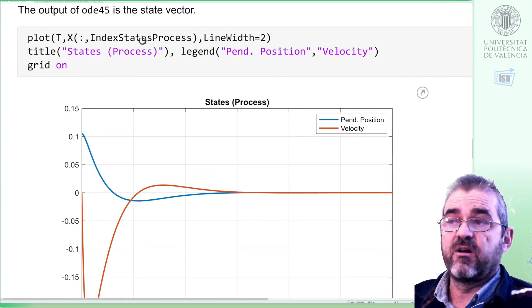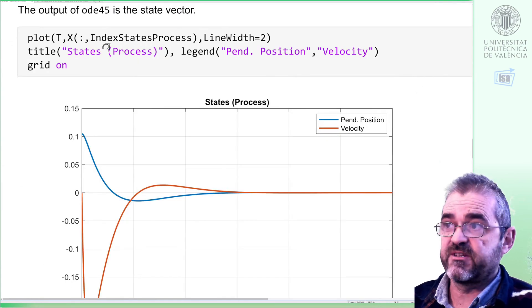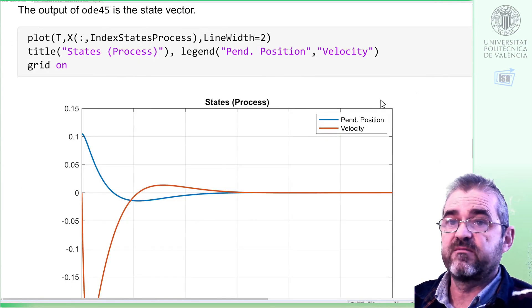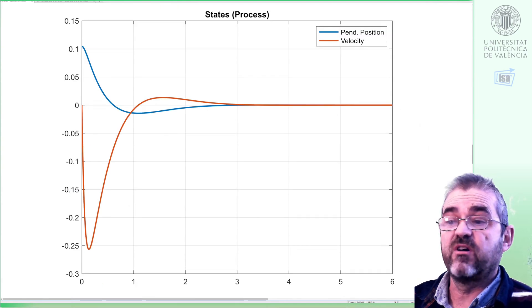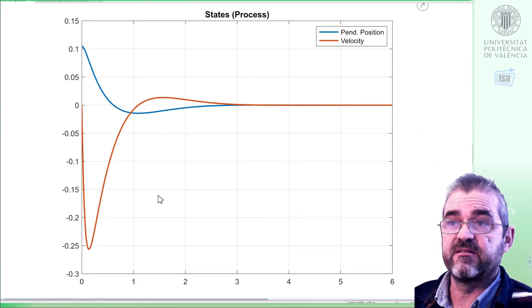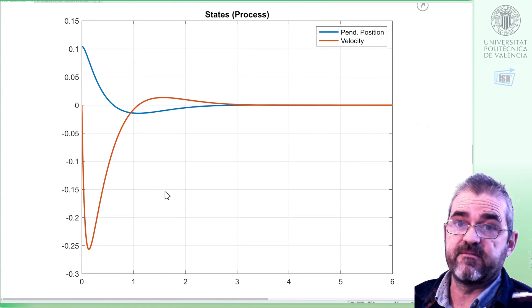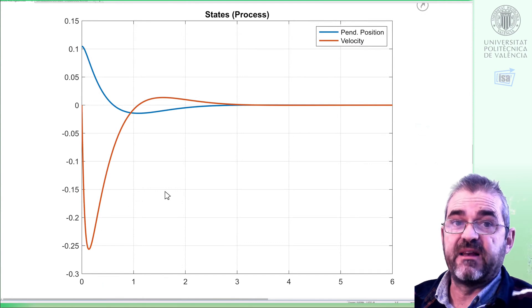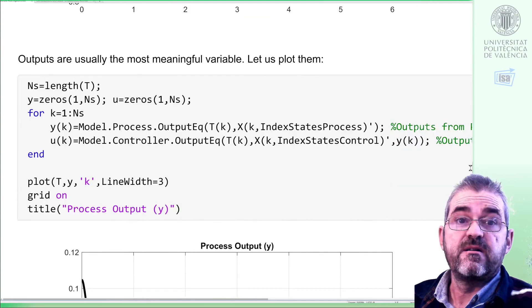So if we plot the columns corresponding to the first and second states of the process, we get this time plot of position in blue and angular velocity in red. So the controller stabilizes the pendulum.